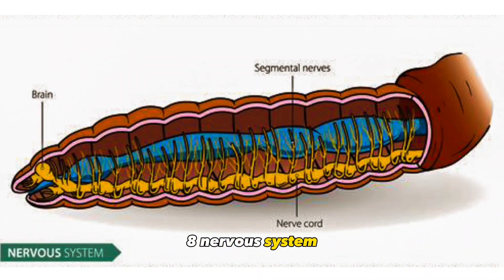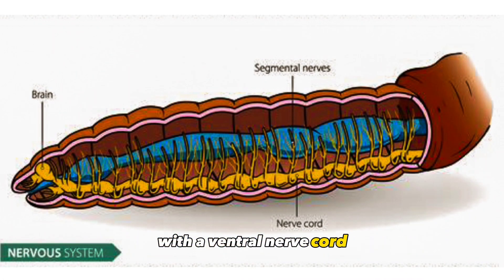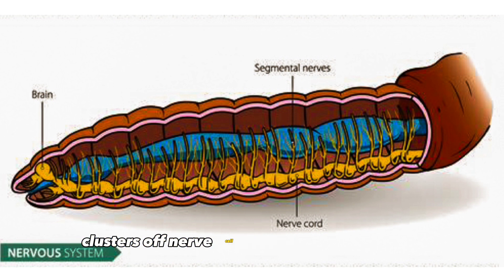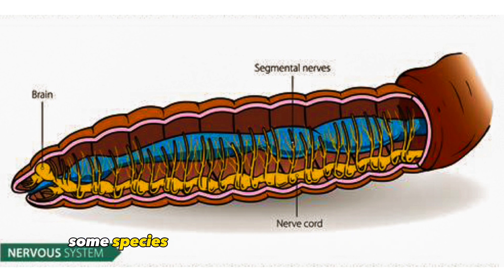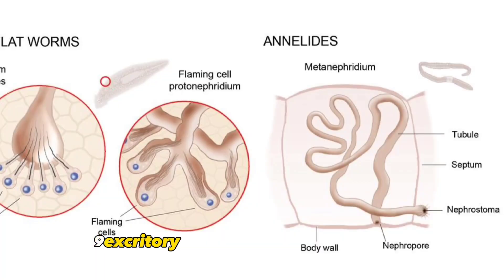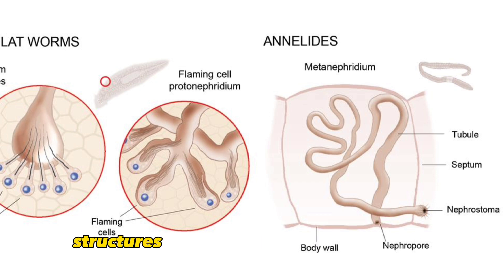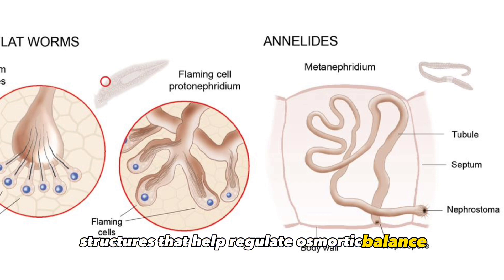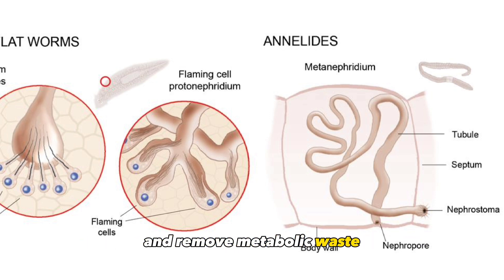Nervous system: They have a well-developed nervous system with a ventral nerve cord and ganglia, clusters of nerve cell bodies, in each segment. Some species have specialized sensory structures. Excretory system: Annelids possess nephridia, which are excretory structures that help regulate osmotic balance and remove metabolic waste.